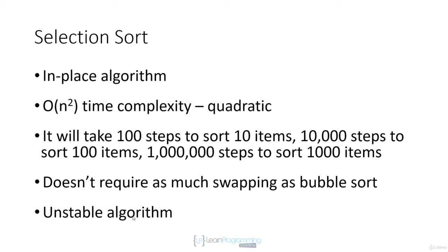Selection sort is an in-place algorithm — it doesn't use any extra memory. As with bubble sort, it's okay to use a few extra fields as long as the extra memory doesn't depend on the number of items you're sorting. It's a quadratic algorithm with a time complexity of O(n²), because we have n elements in the array and for each element we traverse n elements. However, it doesn't require as much swapping as bubble sort — we only swap once per traversal.